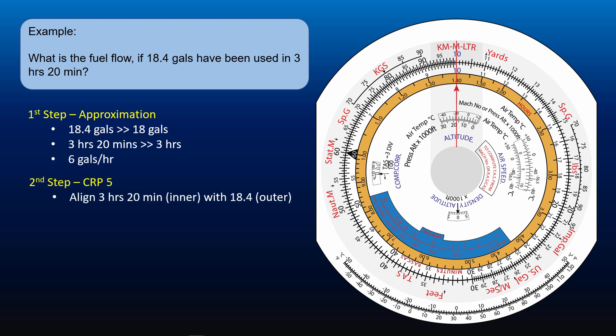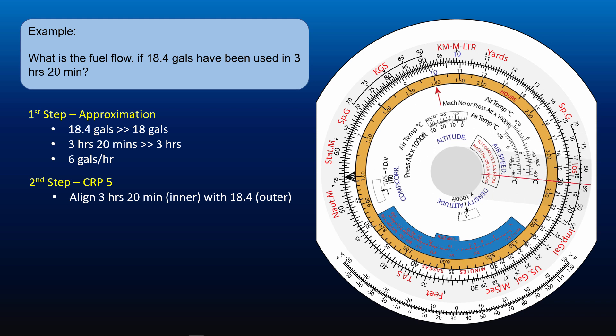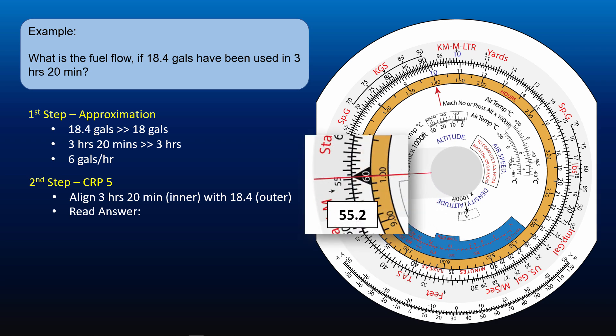First, align 3 hours 20 minutes on the orange scale or 200 minutes on the inner scale with 18.4 on the outer scale. Using the cursor will help us to get an accurate answer. Read off the answer against the 60 index: 55.2. From our approximate answer, we know that the correct answer is 5.52 gallons per hour.